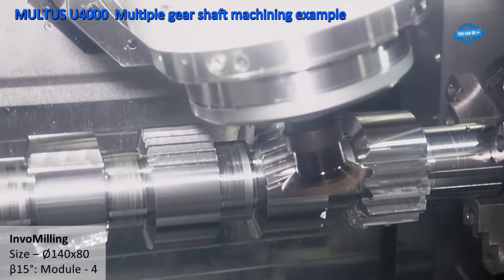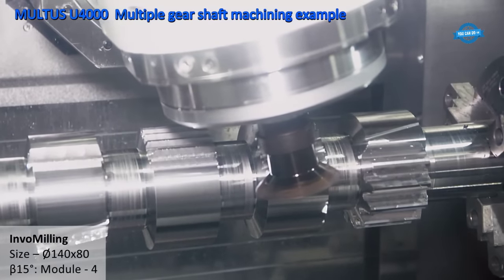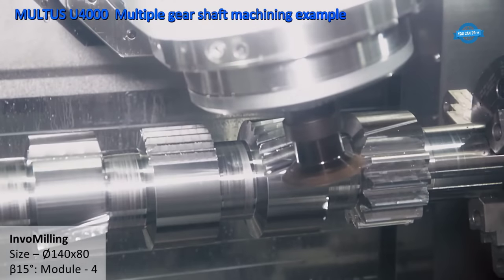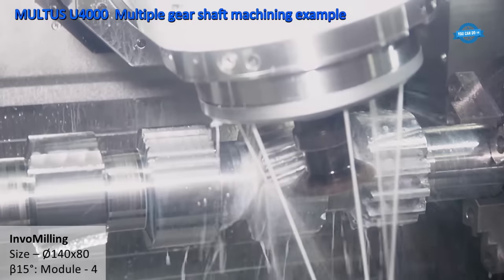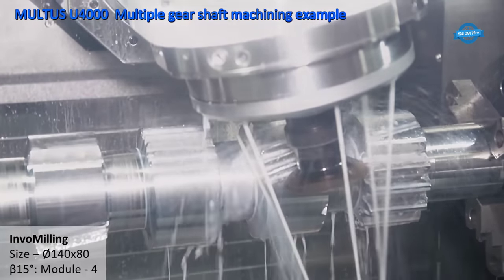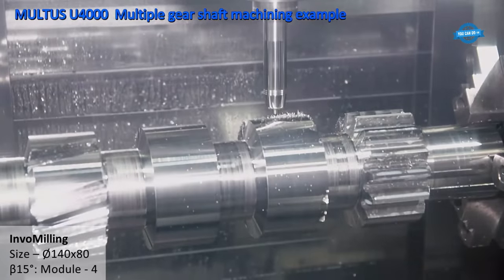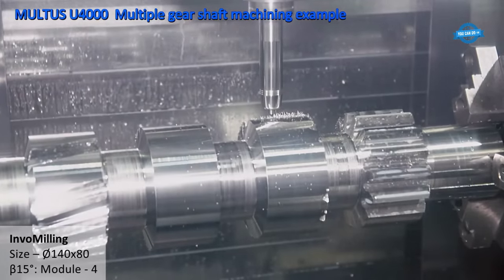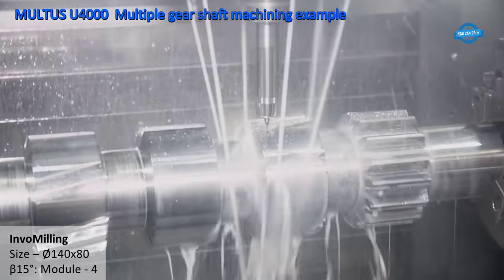One of the key advantages of the Maltus U-4000 is the ability to complete work in a single setup. The ATC ensures quick and seamless tool changes, allowing for uninterrupted machining operations. Even with the completion of tasks, there are tools to spare in the ATC, further enhancing efficiency and reducing downtime.